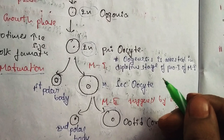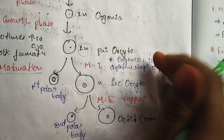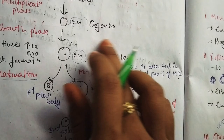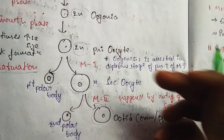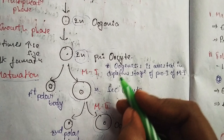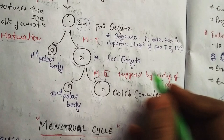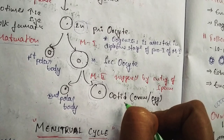One important significance: oogenesis is arrested at the diplotene stage of prophase 1 of meiotic division 1. The primary oocytes remain stored and stopped here. If fertilization occurs after primary oocyte formation, the process continues and is triggered by the entry of sperm into the secondary oocyte. This completes oogenesis in the female reproductive system. Next class, we will talk about the menstrual cycle.